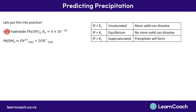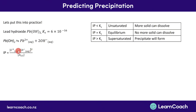Let's put that into practice. If we've got lead hydroxide, Pb(OH)₂, with a Ks of 6×10⁻¹⁶, you want to approach this the same way as the last PowerPoint — write the equation out first, add the information we know, then answer the question. I've written out the equation for Pb(OH)₂ turning into one Pb²⁺ and two OH⁻. The IP expression is products over reactants: [Pb²⁺] times [OH⁻] squared — remembering that solids are excluded from solubility equations.